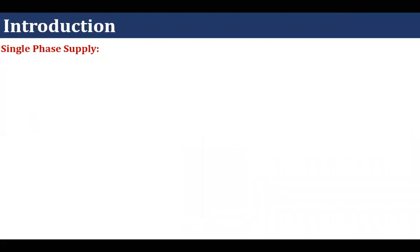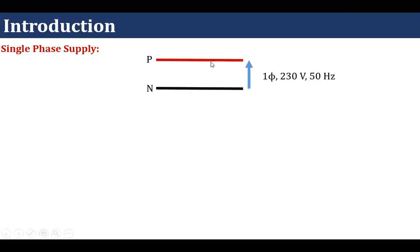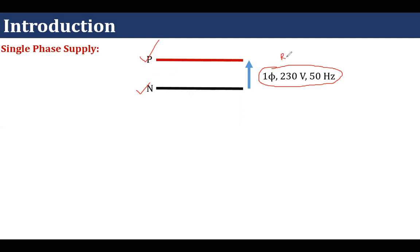Now, let's understand what is single-phase supply. In case of single-phase supply, we have two wires — one is known as phase and another is known as neutral. It is convention to use a red wire for the phase and a black wire for the neutral. In India, the rated value of single-phase supply is 230 volts, 50 Hz. Here 230 is the RMS value and 50 Hz is the frequency.